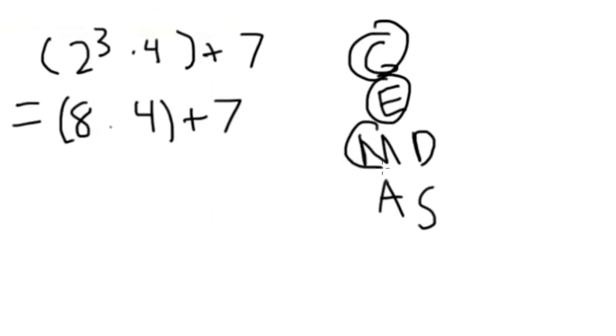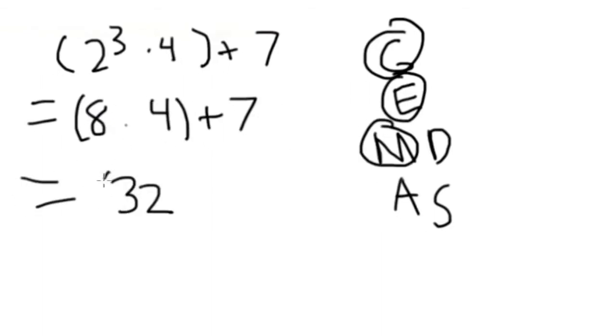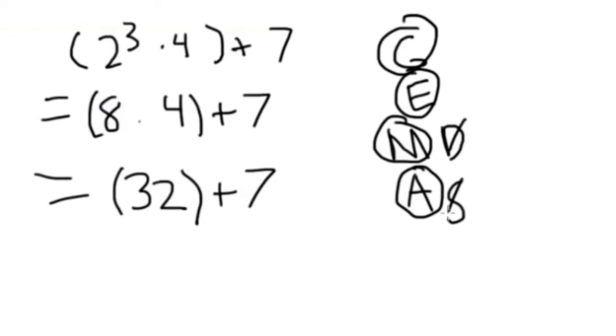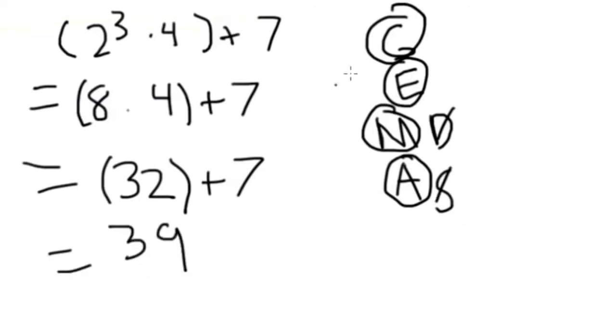Next, you should do multiplication. 8 times 4 equals 32. Finally, you do the addition. 32 plus 7 equals 39. Then you are done with the problem.